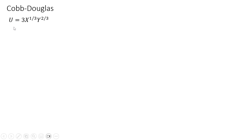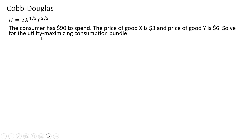Let's start here with a Cobb-Douglas utility function. Utility equals the following. The consumer has $90 to spend, the price of good X is $3, and the price of good Y is $6. Solve for the utility maximizing consumption bundle.